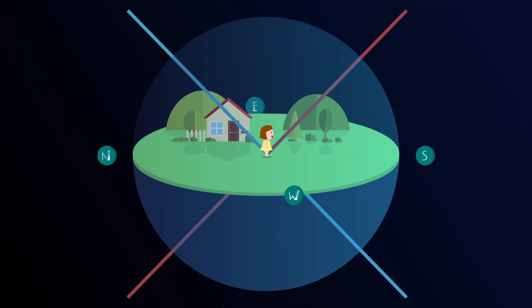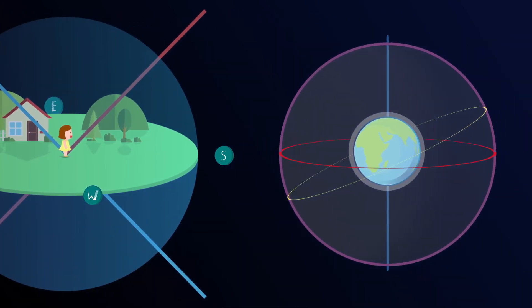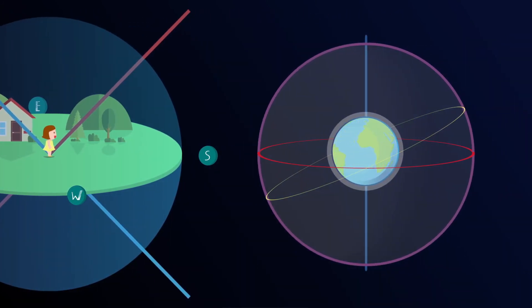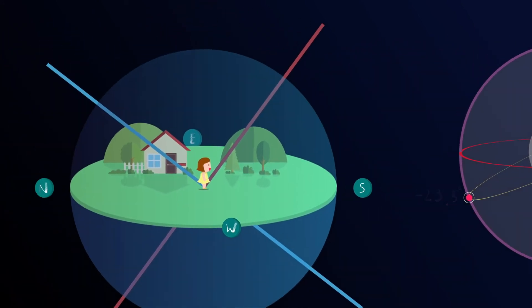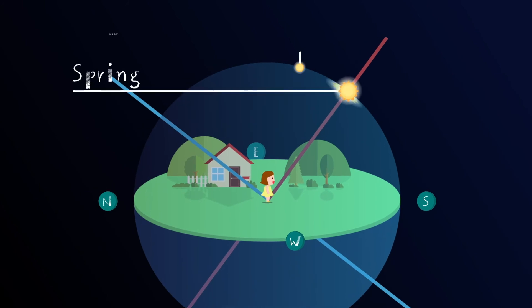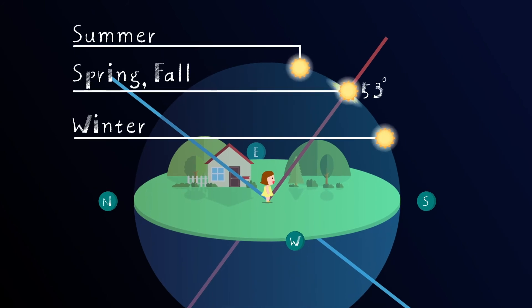Keeping this in mind, let's calculate the meridian altitude of the sun for each season. Assuming the observer is located at a latitude of 37 degrees north, the declination of vernal equinox, summer solstice point, autumnal equinox, and winter solstice point is 0 degrees, plus 23.5 degrees, 0 degrees, and minus 23.5 degrees, respectively. This means that the meridian altitude of the sun in spring, summer, fall, and winter is 53 degrees, 76.5 degrees, 53 degrees, and 29.5 degrees, respectively.